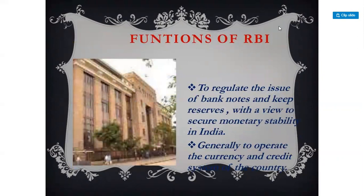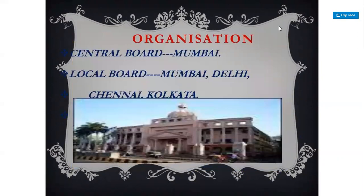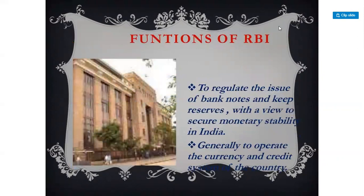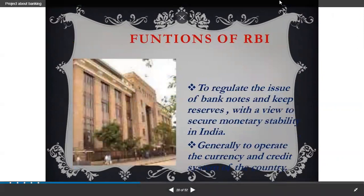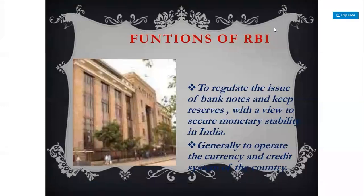Now we will discuss the functions of the RBI. There are five main functions: first, currency authority — issuing currency and all related work done by the RBI; second, banker to the government; third, banker's bank and supervisor; fourth, control of money supply and credit; and fifth, custodian of the foreign exchange reserve.